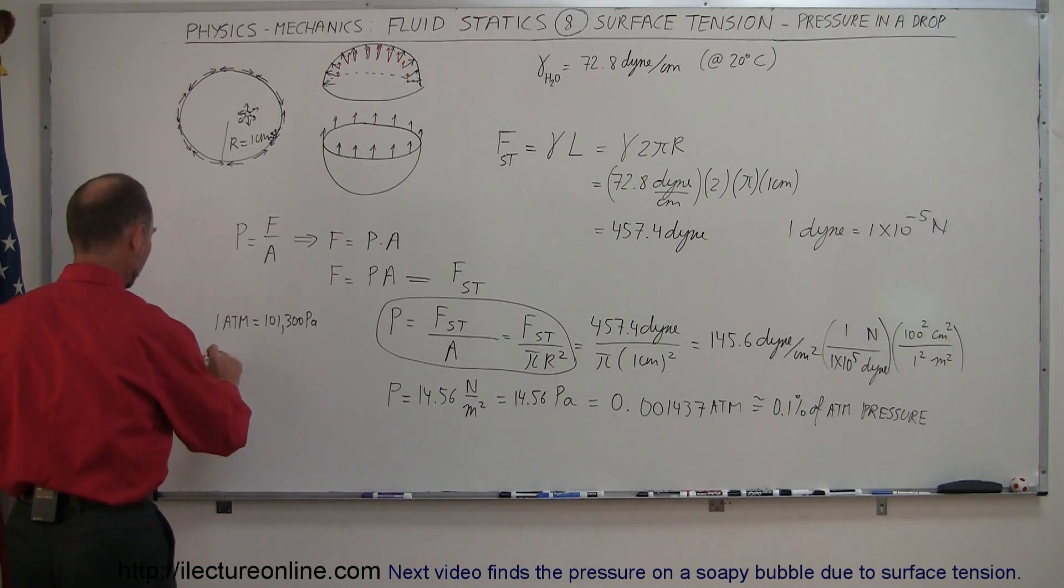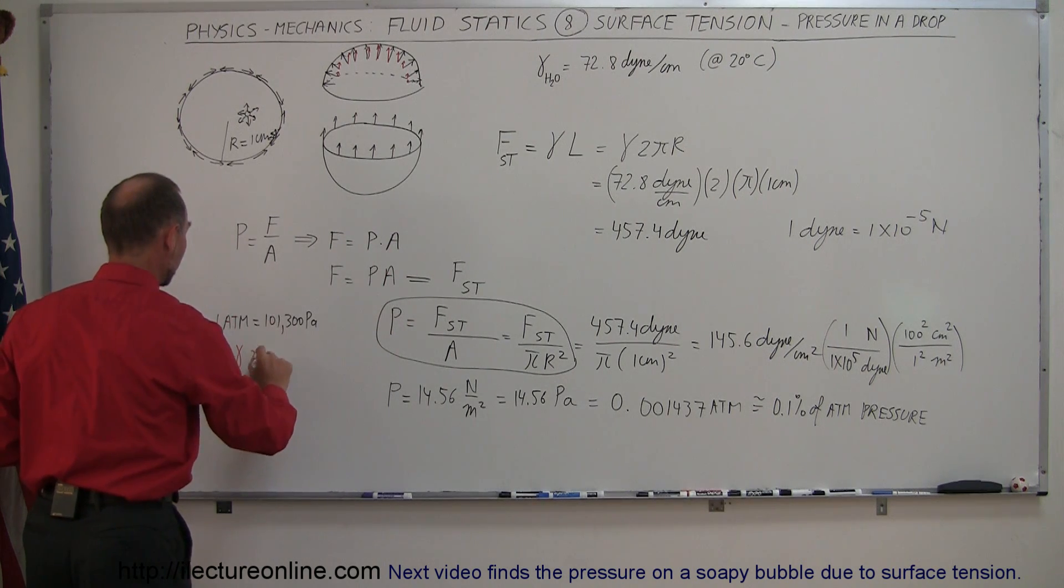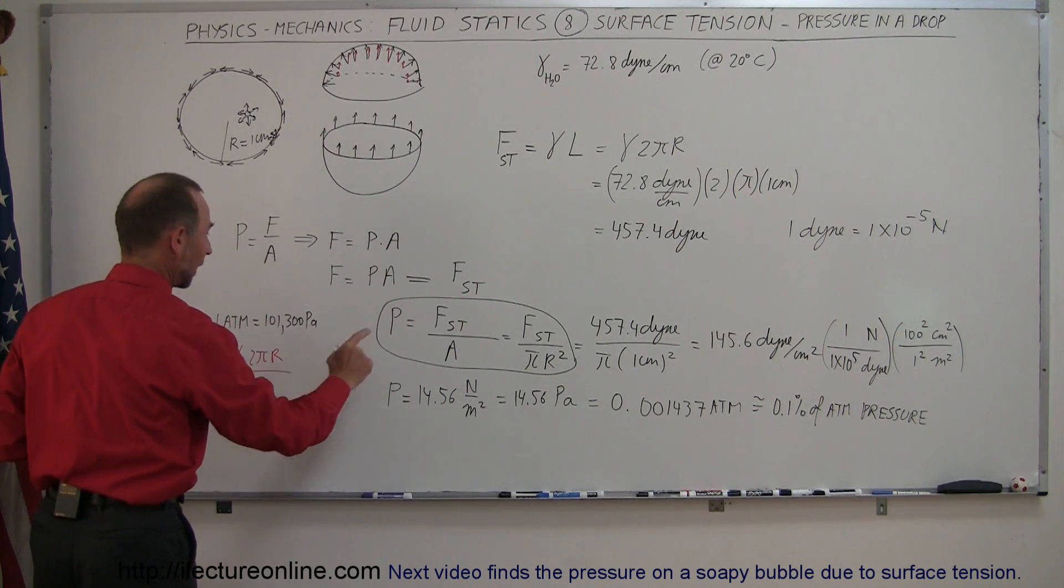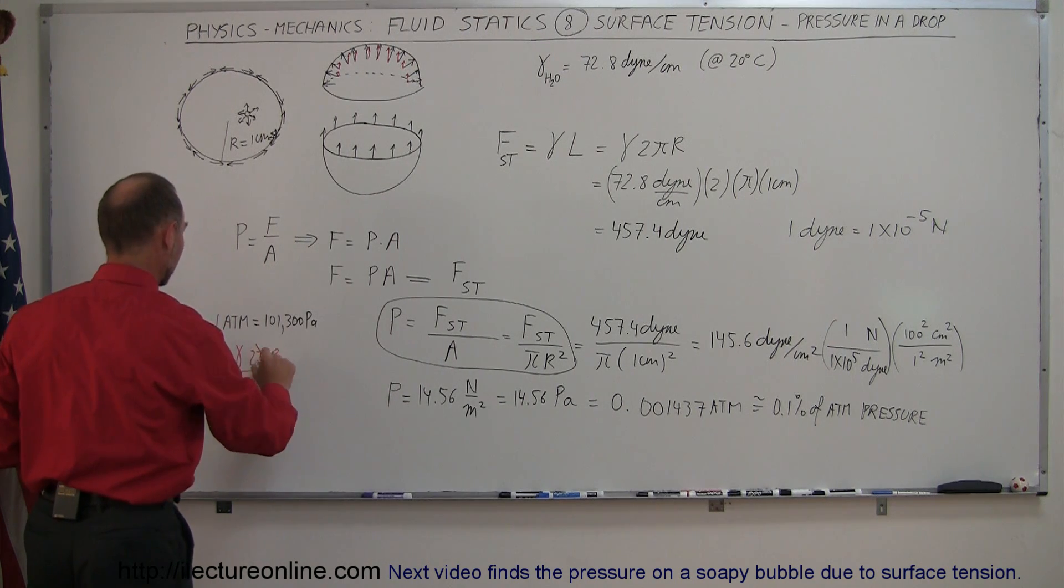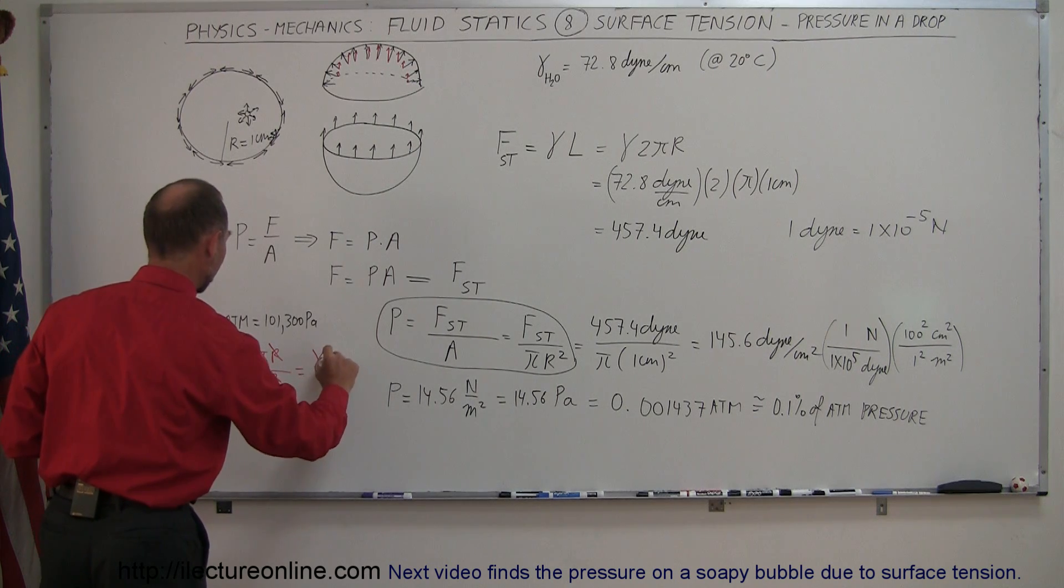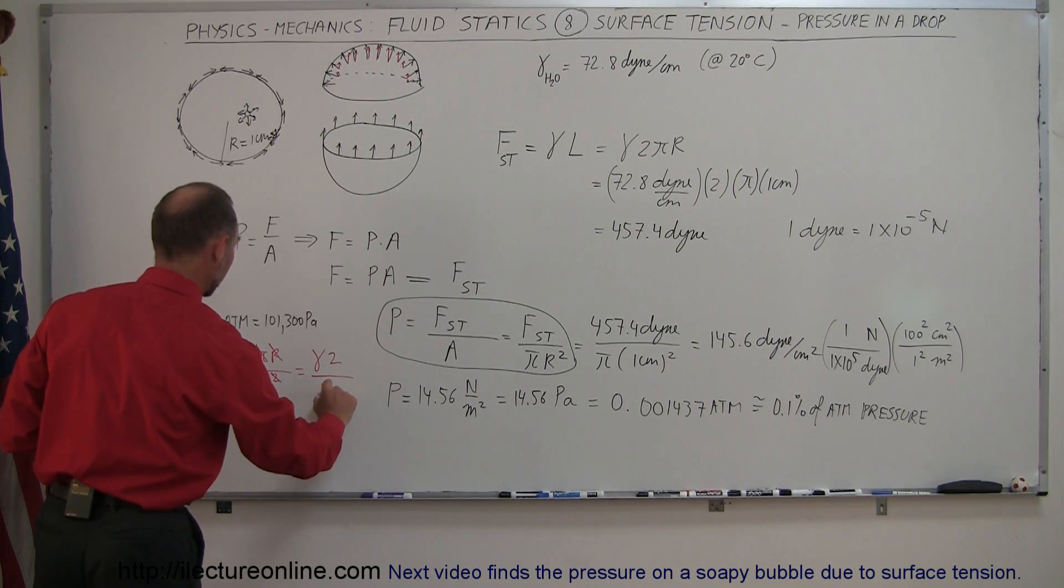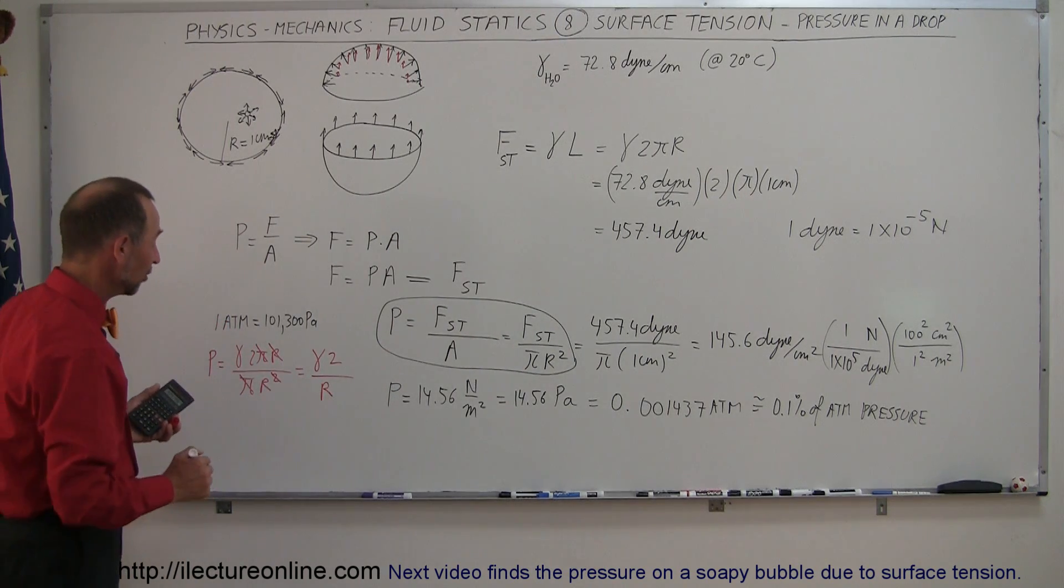So if I write the pressure is equal to the force of the surface tension, which is γ times 2πr divided by the cross section area, which is πr². And notice the π's cancel and one of the r's cancel. So this is equal to γ times 2 divided by r, the radius of the water drop. Now that's actually a simpler equation, isn't it?